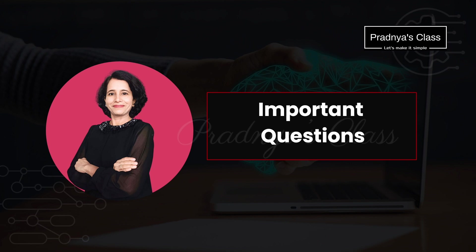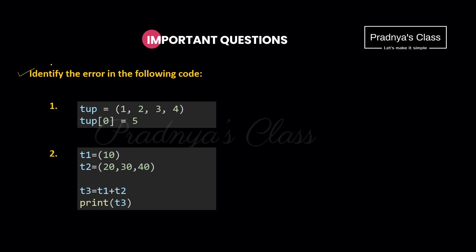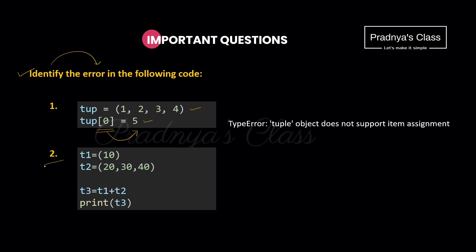Now let's discuss some important questions. The first question: identify the error in the following code. In the first statement, a tuple is created. In the second statement, we access the first element and try to change it using assignment. But tuple is immutable, so we get the error: 'TypeError: tuple object does not support item assignment.'